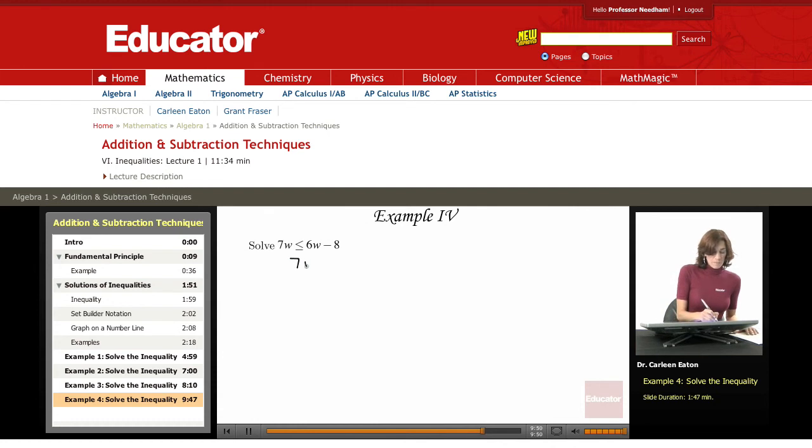At this time I've got a variable on both sides, so in order to work with this I need to get the variables on one side. I'm going to achieve that by subtracting 6W from both sides.